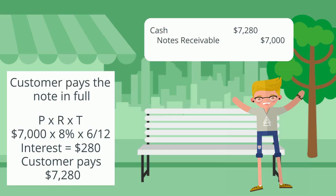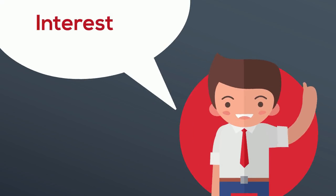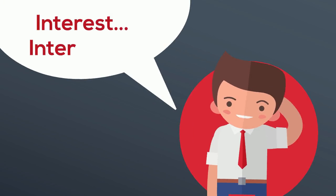We don't balance yet because we haven't recorded the interest. We earned interest by loaning this money to the customer, therefore we will credit interest revenue for two hundred and eighty dollars. Interest is definitely interesting!